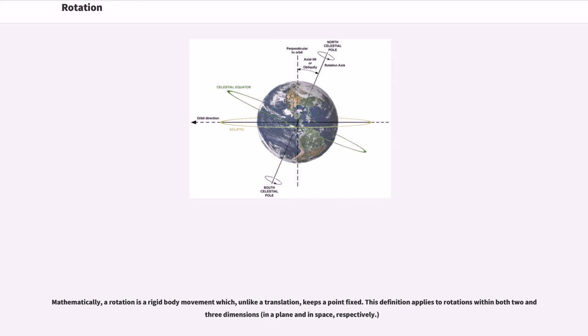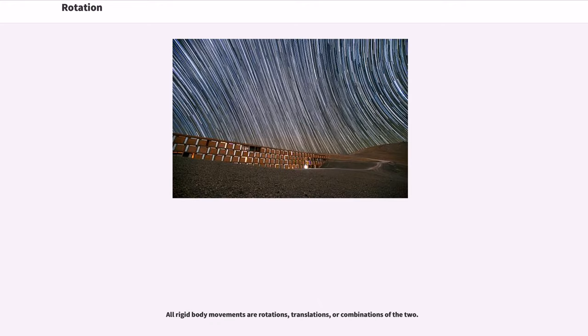Mathematically, a rotation is a rigid body movement which, unlike a translation, keeps a point fixed. This definition applies to rotations within both two and three dimensions. All rigid body movements are rotations, translations, or combinations of the two.